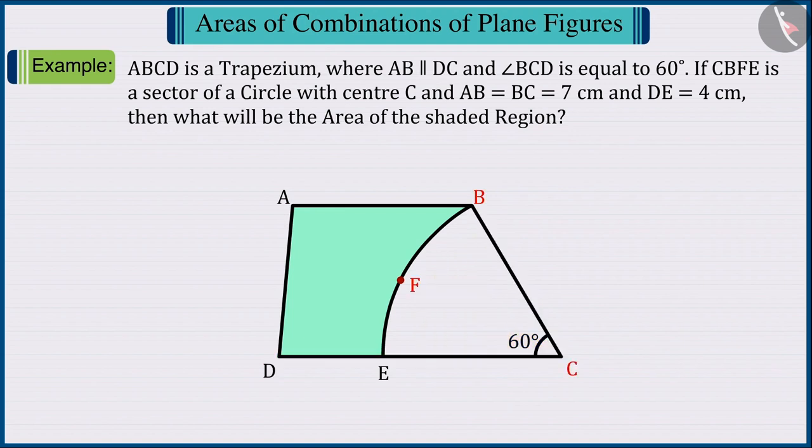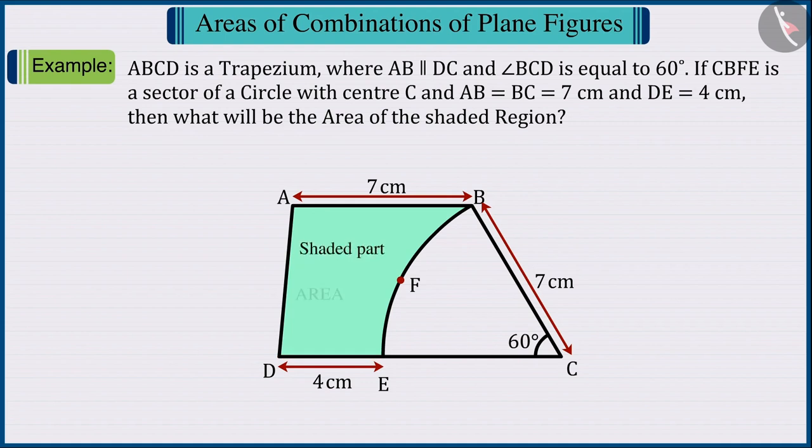If CBFE is a sector of a circle with centre C and the measure of AB and BC is 7 cm and the measure of DE is 4 cm, then what will be the area of the shaded region?